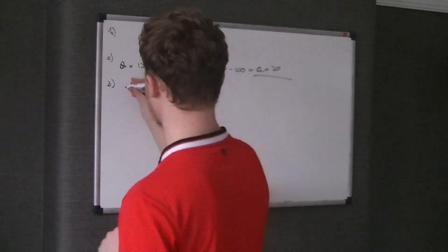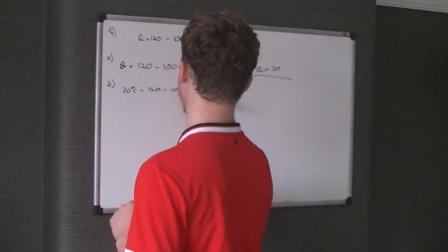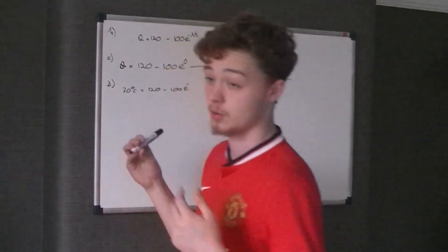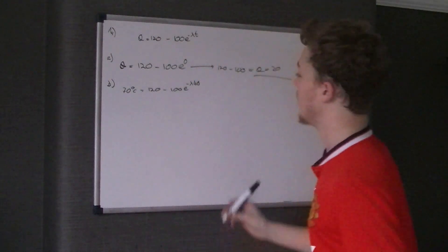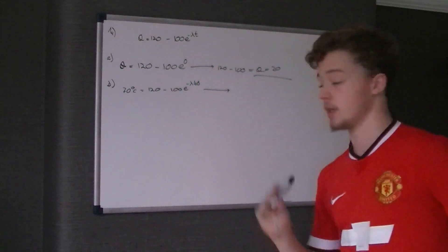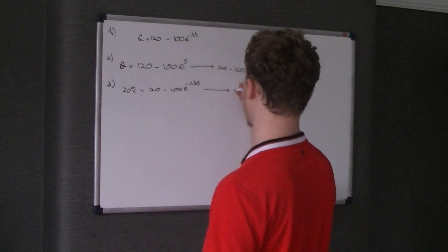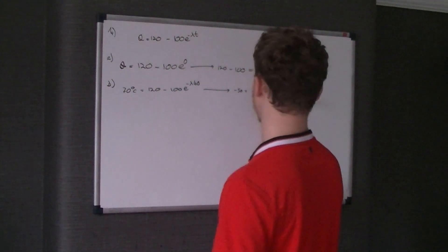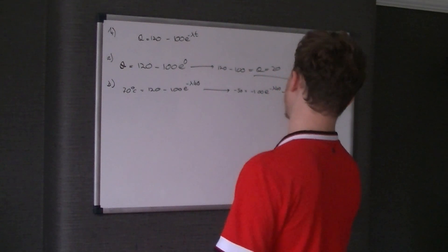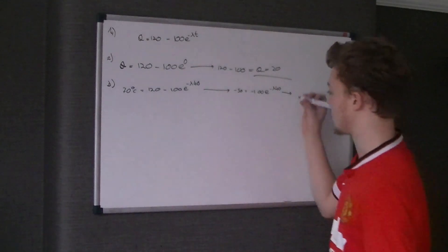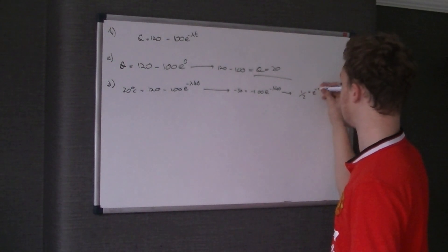So what it says is, temperature is 70 degrees. So you write theta as being 70 is 120 take 100 e to the negative lambda t. Now you know t is 40, so you can put negative 40 lambda. And then what we do is rearrange it. We get negative 50 is equal to negative 100 e to the power of negative lambda 40. And obviously you could cancel the negatives out. So it's a half equals e to negative lambda 40.